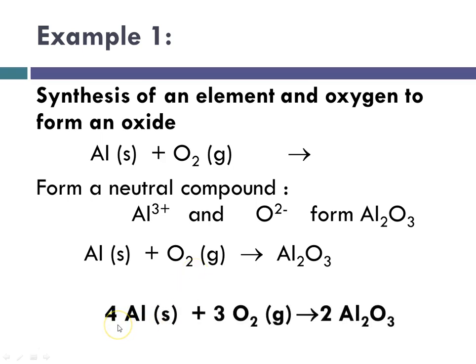When we do our balancing, the results will be 4 aluminum in the solid state plus 3 oxygens. Elemental oxygen would yield aluminum oxide. And I also want to point out, I would be remiss, that this particular reaction is also a combustion because anything combining with elemental oxygen is also a combustion.